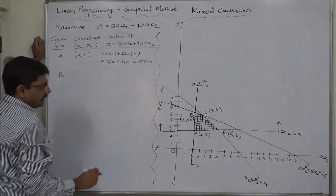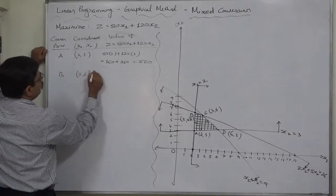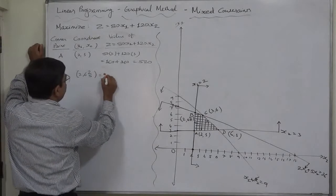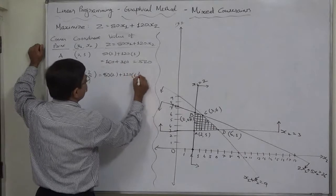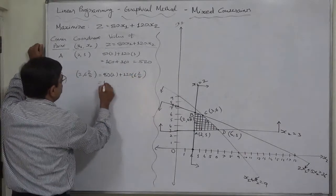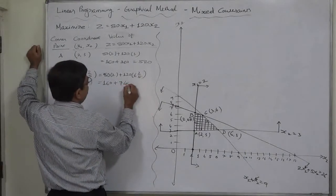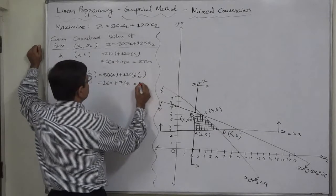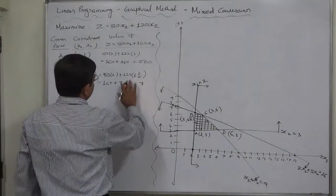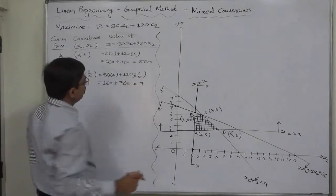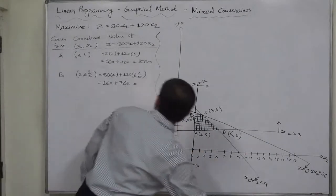At B it is 2 and 6 and 2 fifth. So it will be 160 plus 748. So it will be, no, it should be 768. I am sorry. So it is going to be 920.